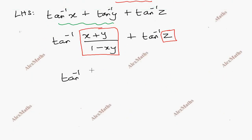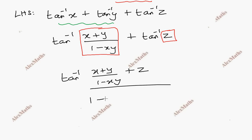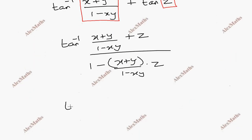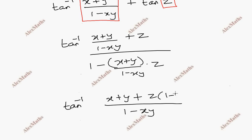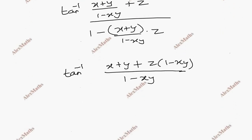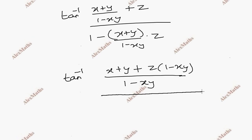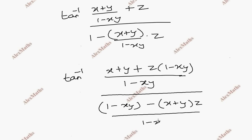So we get tan inverse of (X plus Y) in the numerator, then divided by (1 minus X times Y), with Z added. Expanding: the numerator becomes X plus Y plus Z times (1 minus XY), and the denominator becomes 1 minus XY minus (X plus Y) times Z.